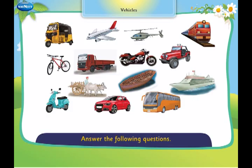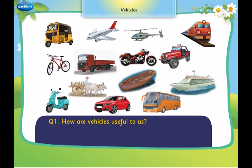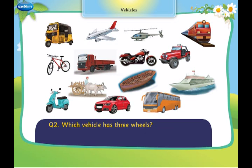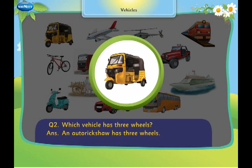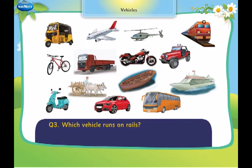Answer the following questions. How are vehicles useful to us? Vehicles help us to travel from one place to another. Which vehicle has three wheels? An auto rickshaw has three wheels. Which vehicle runs on rail?